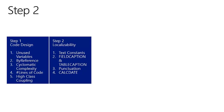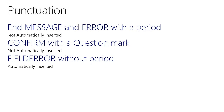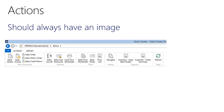Let's move on with step 2: localizability. Always use text constants — this will allow you to translate your application. Table caption and field caption should be used rather than table name and field name. When hardcoding date formulas, put angle brackets around the formula and use English notation so it will always work no matter what language you work in. Use correct punctuation: always end messages and errors with a period, and confirm dialogs with a question mark, as they are not automatically added. However, the field error function does add an automatic period. Finally, actions should always have an image.